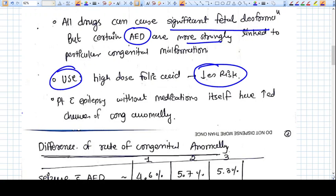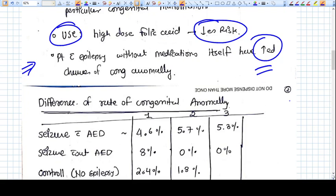One very important aspect of this case is the patients with epilepsy, whether they are taking drugs or not, whether they are taking AEDs or not, they themselves have increased chances of congenital anomaly. We have no clear-cut reason why it happens. If the mother is having a seizure disorder, then there are higher chances of the babies having congenital anomalies. It doesn't make any difference whether they are taking drugs or not.